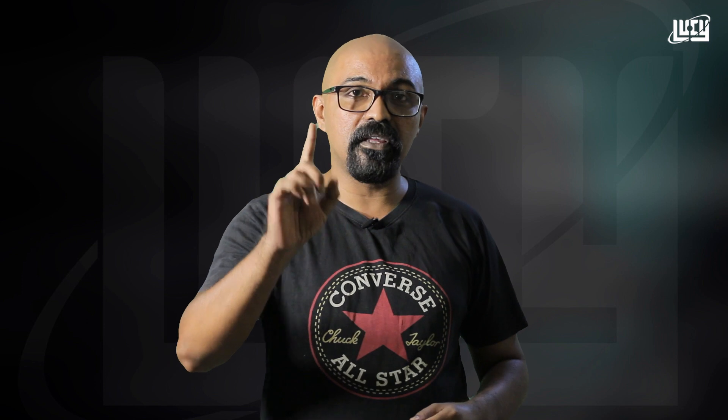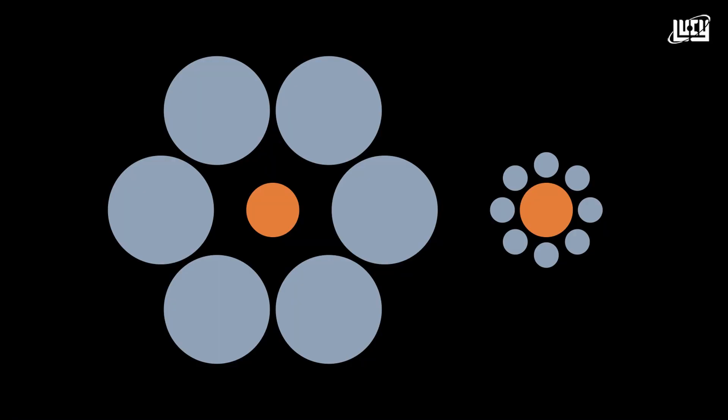What kind of optical illusion is that? We call it the Ebbinghaus Illusion. In this video, there are two different things. The second thing is a small thing — the size of the item is a small thing.